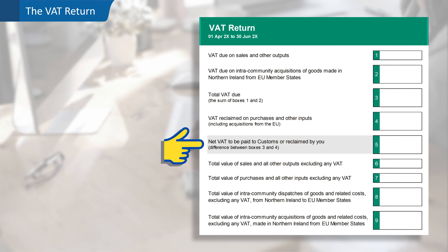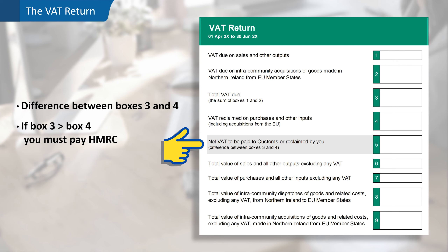Next is box five: the net VAT to pay to HMRC or that is being reclaimed. This is the difference between boxes three and four. If the figure in box three is more than the figure in box four, the difference is the amount you must pay to HMRC. But if the figure in box three is less than the figure in box four, then HMRC will refund the difference, subject to any inquiries they may need to make.